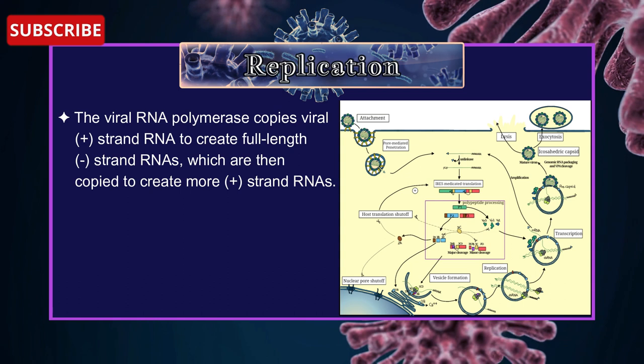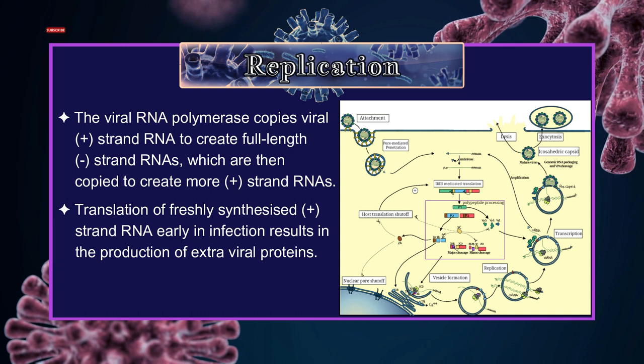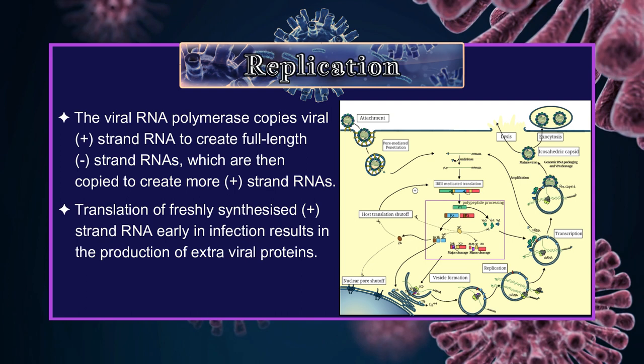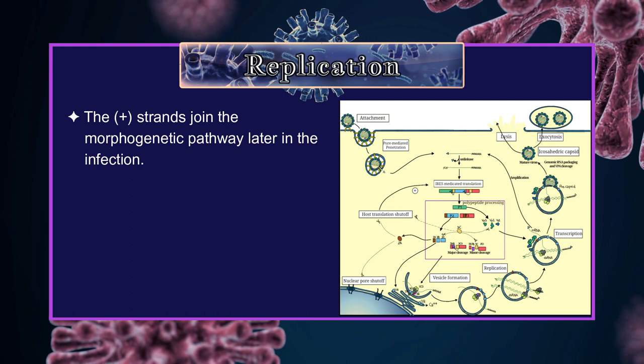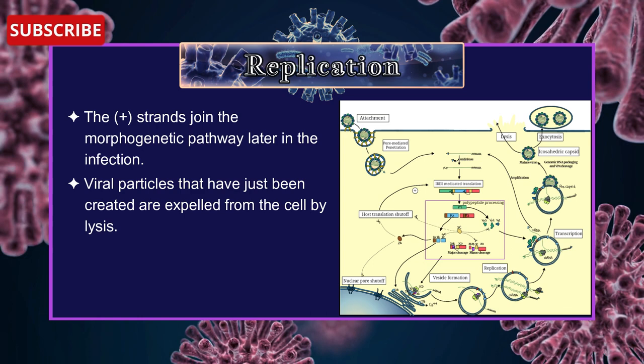Translation of freshly synthesized positive-strand RNA early in infection results in the production of extra viral proteins. The positive strands join the morphogenic pathway later in the infection. Viral particles that have just been created are expelled from the cell by lysis.